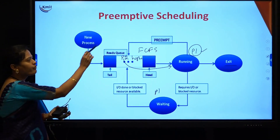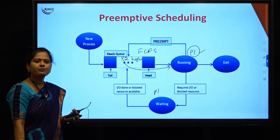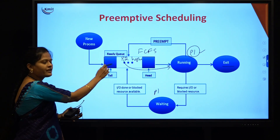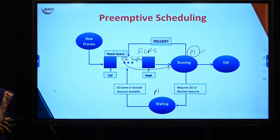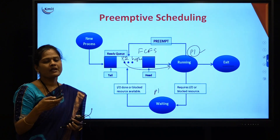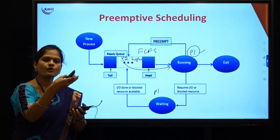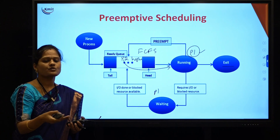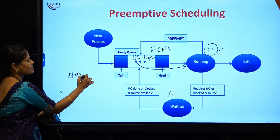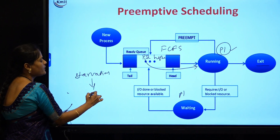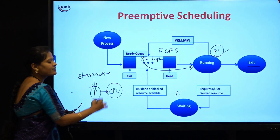In preemptive scheduling, you are forcibly preempting — in the first case because of priority, in the second case because the process is waiting for an I/O device. The advantage is that higher-priority processes get to execute. However, the problem is that lower-priority processes are always waiting for their chance. If a higher-priority process keeps arriving, the lower-priority process is continuously waiting for the CPU. This problem is known as starvation.